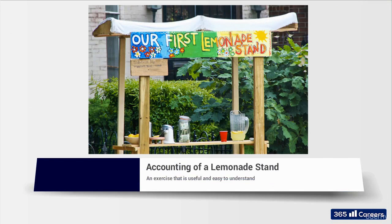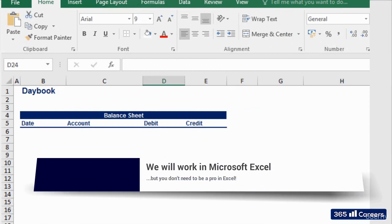Our task is to create accounting entries and financial statements for a business founded by two friends who want to open a lemonade stand to make extra money during the summer. We will imagine they have registered a company and need to organize their financial information to produce a balance sheet and an income statement. Transaction by transaction, we will write all necessary entries in the day book and create the respective T-accounts in Microsoft Excel. You can find the Excel file in the course materials section for this lesson.